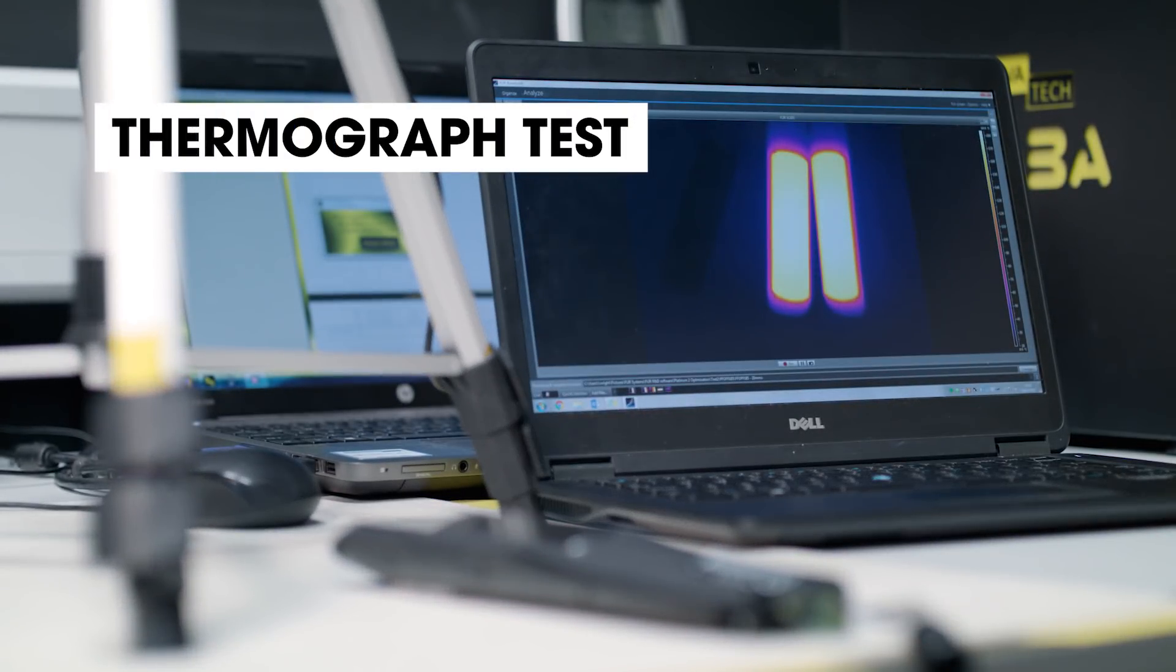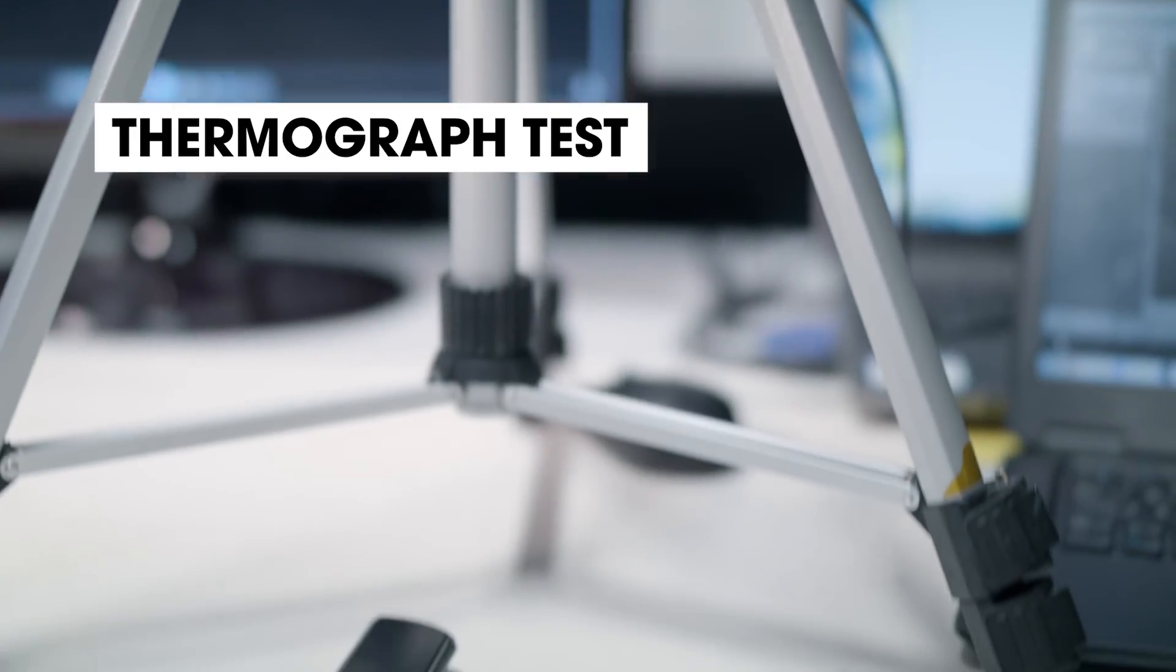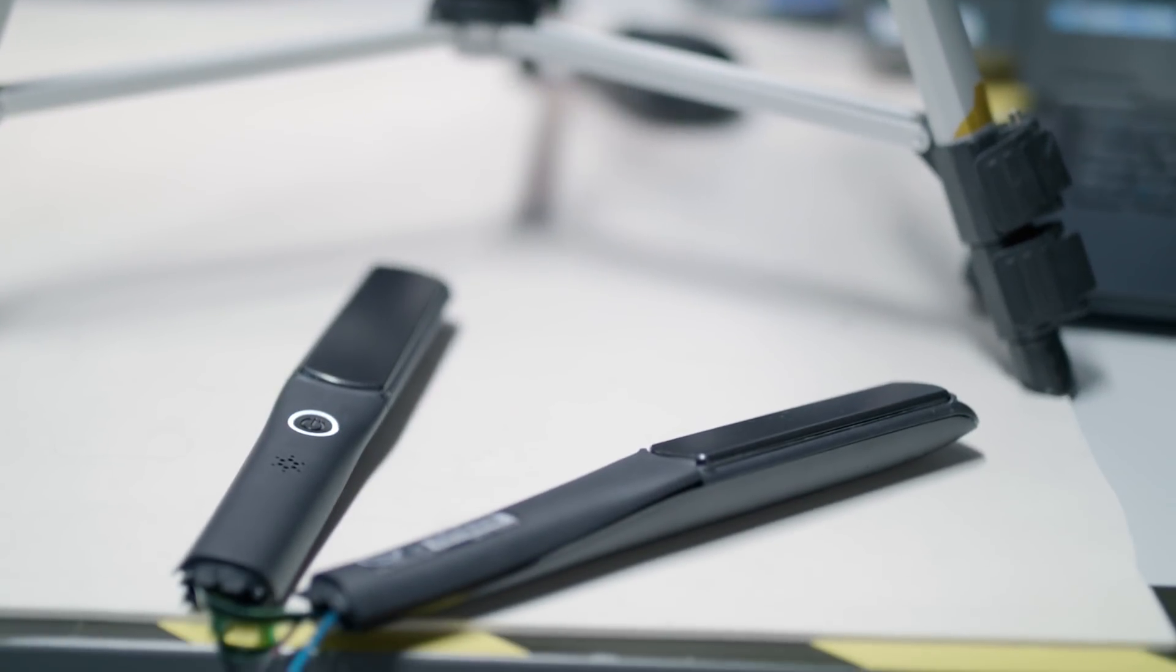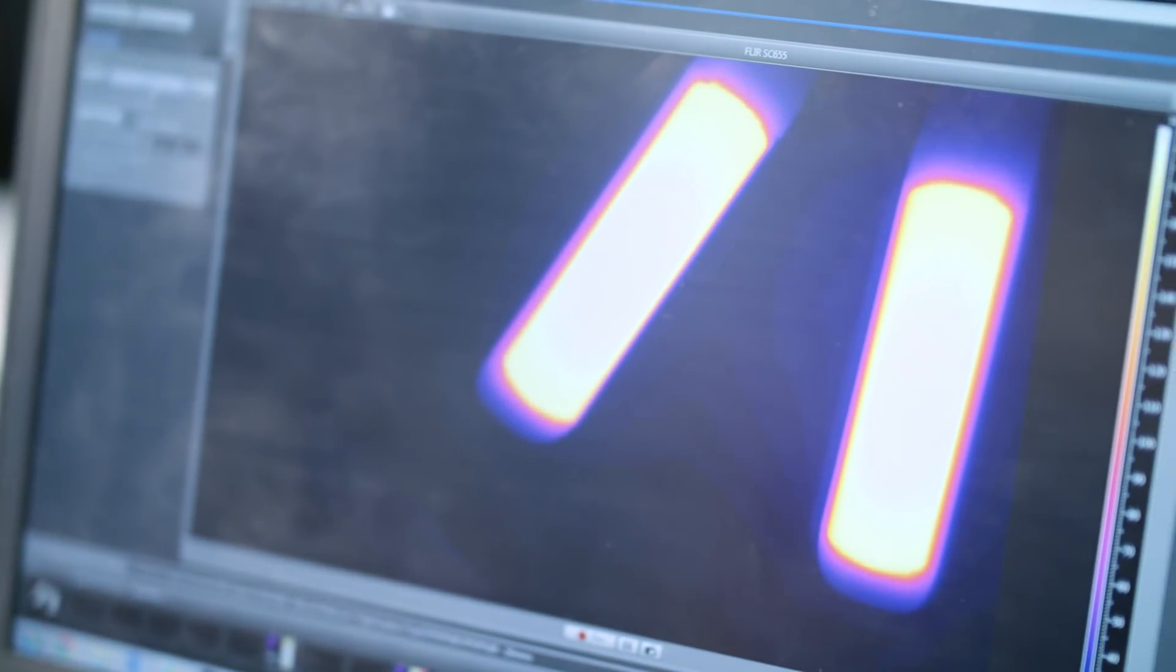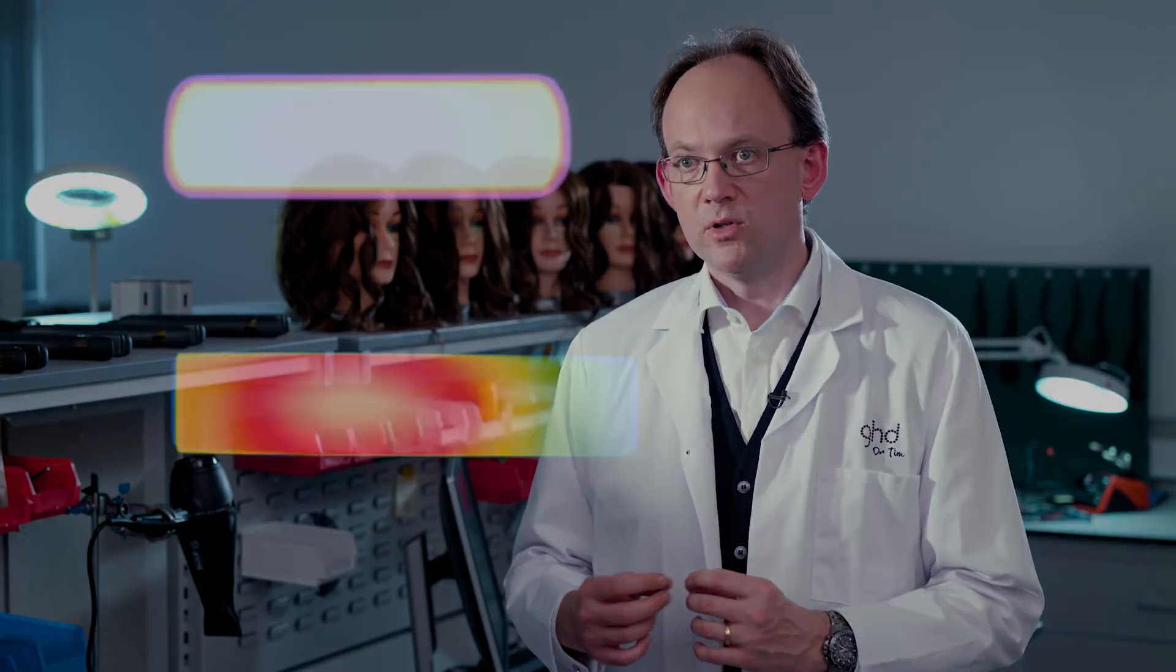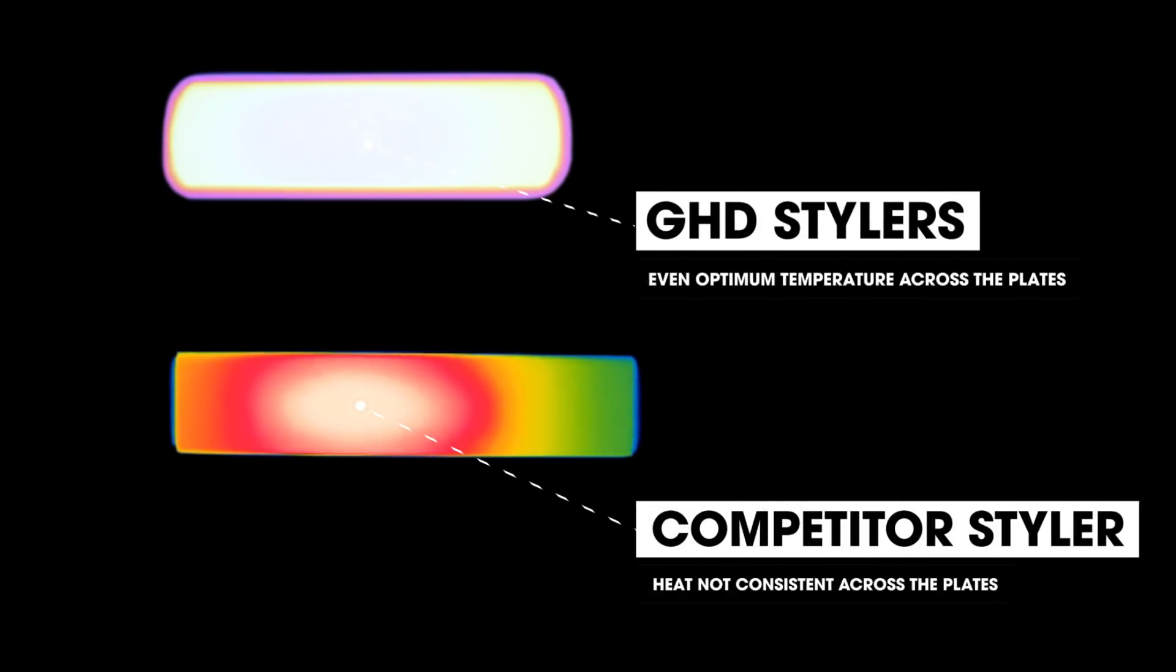All GHD products have unique technology in them to ensure that the plate temperature is even. So as you can see on the GHD Platinum, the color is very, very even on the thermograph, meaning that the temperature is even, whereas on the competitor product, you've got lots of different colors there showing how uneven the temperature is. And that means that on that particular product, you'll get less shine and less even styling.